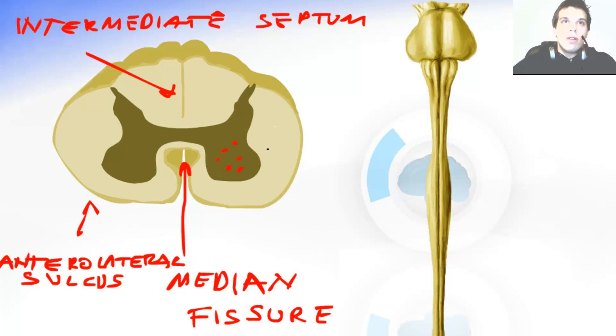And the white matter over here is the place where the axons of the neurons, the tracts, have the myelin sheath. That's why they have this white color. I explained that in the lesson about the nerve.